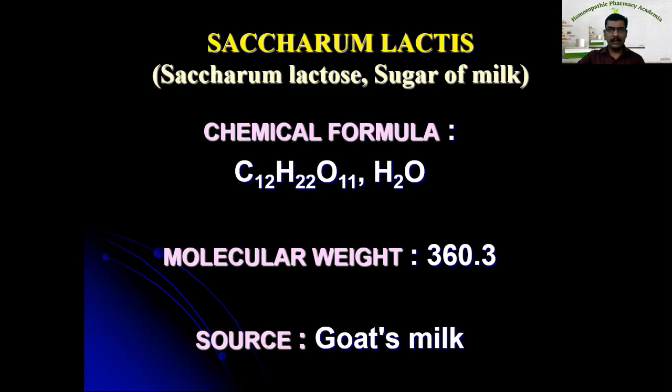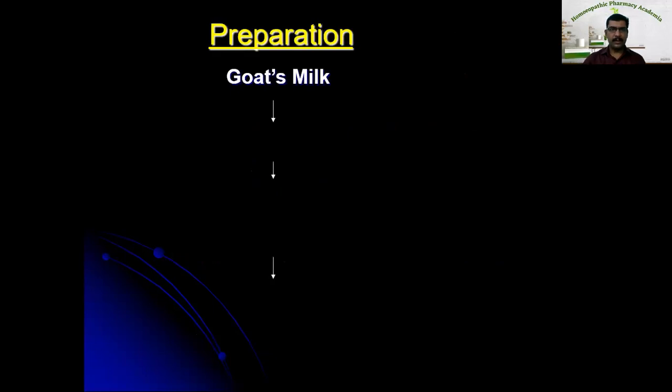Let us see the preparation of lactose in detail. Lactose or sugar of milk used in homeopathic pharmacy is prepared from cow's milk. Cow's milk undergoes skimming, which is a process of removing fat from the milk. The most easiest method is the milk is allowed to cool so that the fat settles over the top and we can remove it manually.